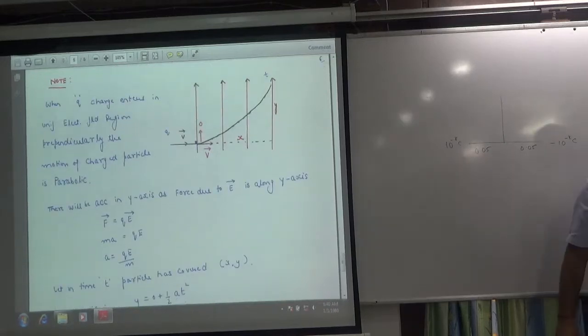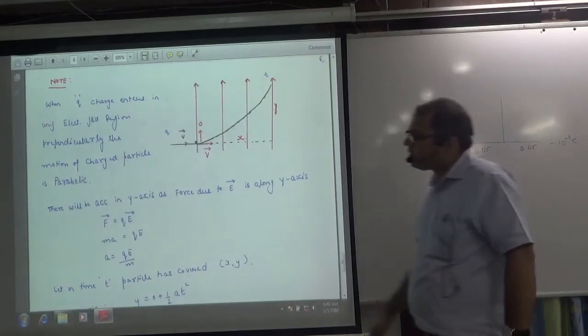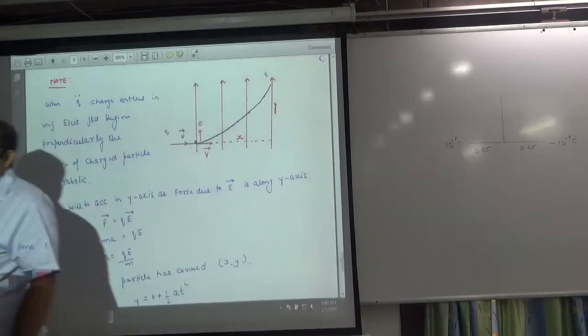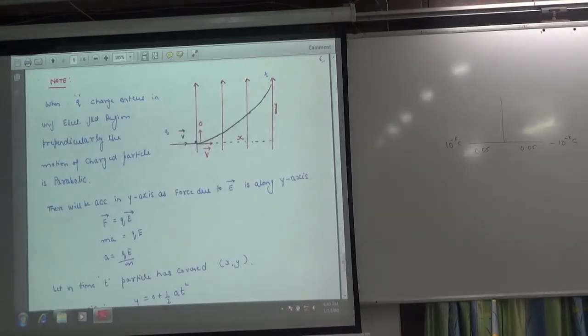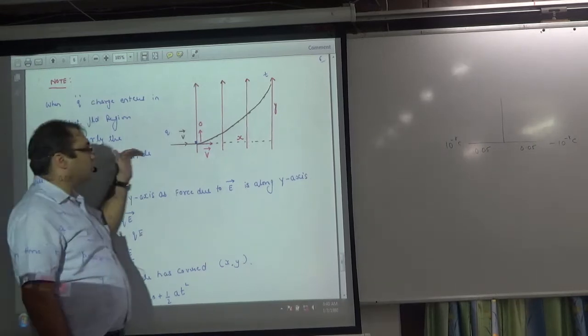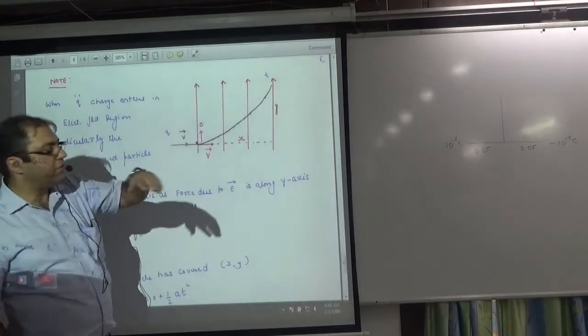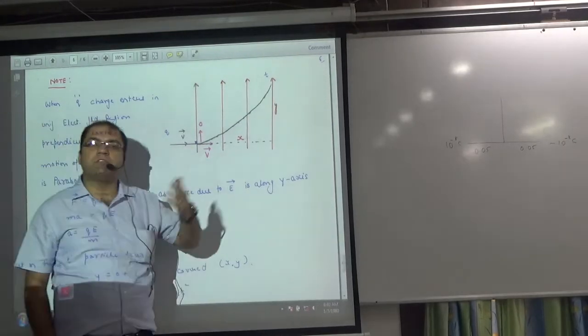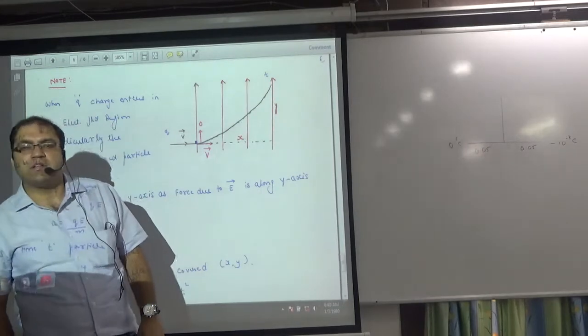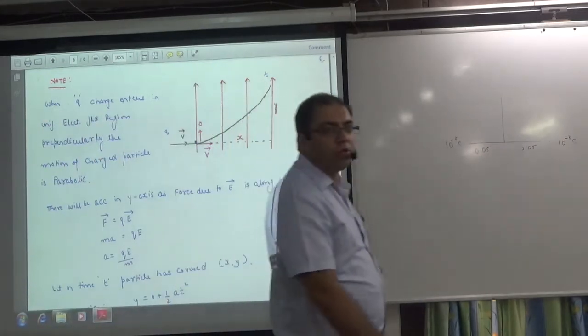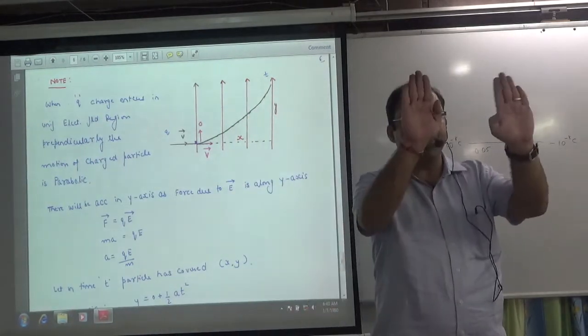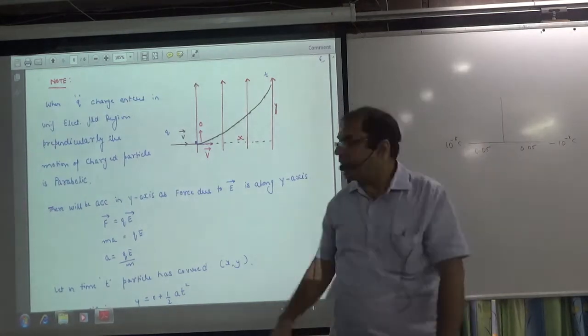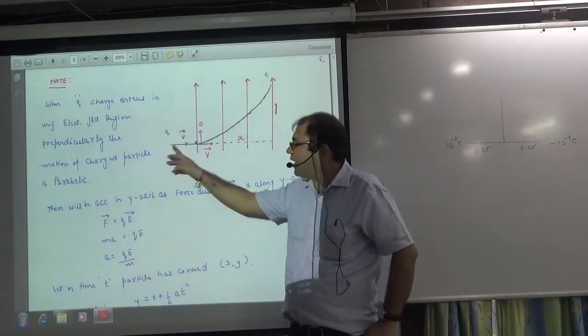And last in this, this objective is a result I have written a note. When we revise this note we will read this note. A charged particle came with a positive charge with a velocity of v and it enters a transverse electric field.